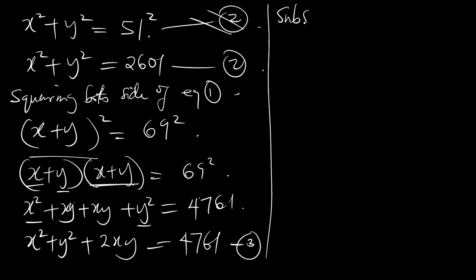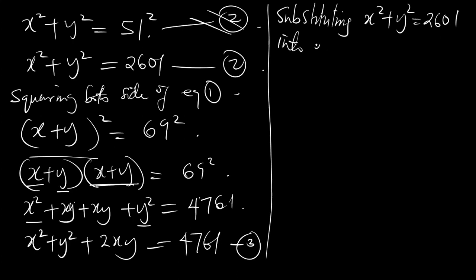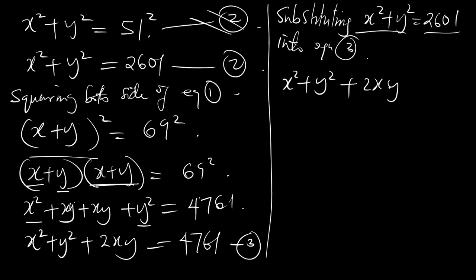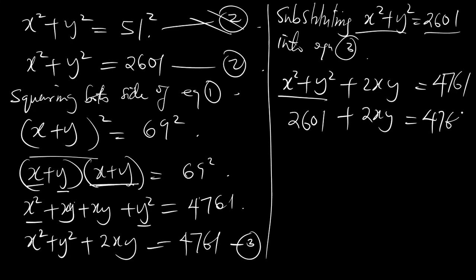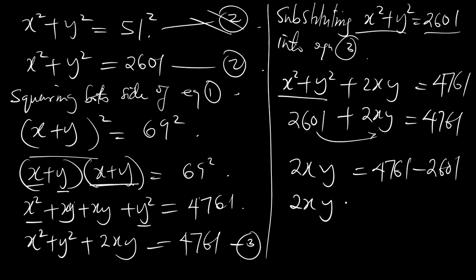Now substituting x squared plus y squared equals 2601 from Equation 2 into Equation 3. Wherever we see x squared plus y squared, we replace it with 2601. So in Equation 3 we have 2601 plus 2xy equals 4761. Moving 2601 to the other side, 2xy equals 4761 minus 2601, which gives us 2xy equals 2160. Let's call this Equation 4.